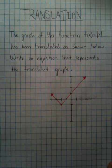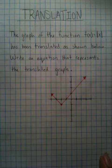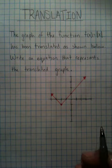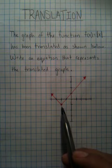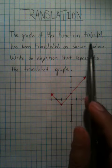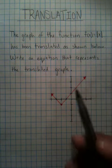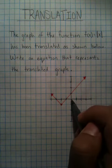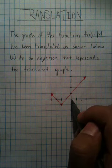Write an equation that represents the translated graph. Now, what it means by translation is it's saying this graph used to be in a different location. This equation tells us that the graph used to be at the very center. That's where the bottom point, the vertex, used to be.